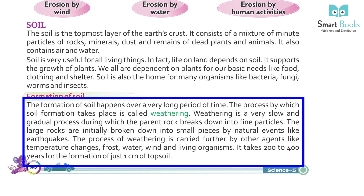The formation of soil happens over a very long period of time. The process by which soil formation takes place is called weathering. Weathering is a very slow and gradual process during which parent rock breaks down into fine particles. The large rocks are initially broken down into small pieces by natural events like earthquakes. The process of weathering is carried further by other agents like temperature changes, frost, water, wind, and living organisms.